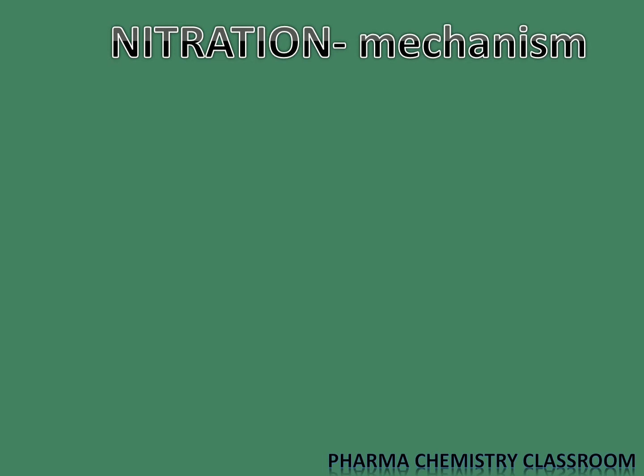Now we are going to focus on the mechanism of nitration. As mentioned already, the first step is the formation of the electrophile. We take the nitrating mixture, that is a mixture of nitric acid and sulfuric acid. The purpose of sulfuric acid is to help nitric acid generate the electrophile, which is the nitronium ion.